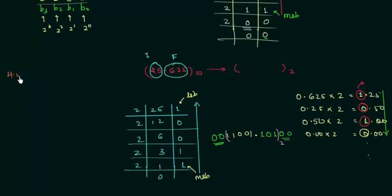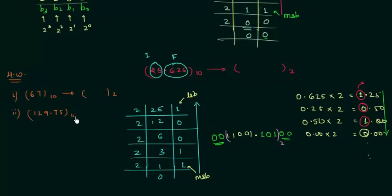Now we will move to the homework problems. There are two: the first is 67 in decimal — convert it to binary. The second is 129.75 in decimal — convert it to binary. Once you have your answer, post it in the comment section. That is all for this presentation. If you have any doubt, go ahead and ask. See you in the next one.